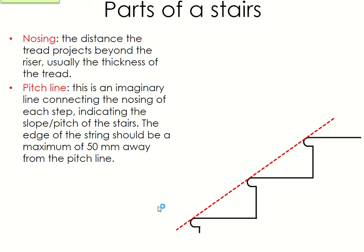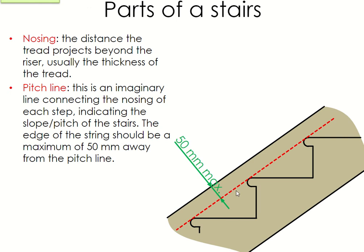The pitch line is basically an imaginary line that joins each step together. If you put a straight edge on each step you can measure the angle or pitch of the stairs in your house. The 50 millimetre rule means you want the string — the side piece — to be higher than the steps so you can't see the steps from the edge; it also gives a surface to joint the risers and treads into. The maximum is about 50 millimetres; you wouldn't really want it any bigger.